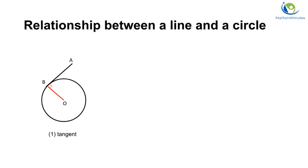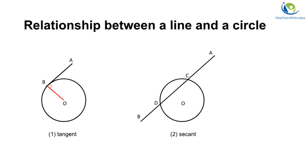In such a case, the radius OB is perpendicular to line AB. In case 2, a line AB intersects the circle at two points C and D. Such a line is called a secant of the circle.